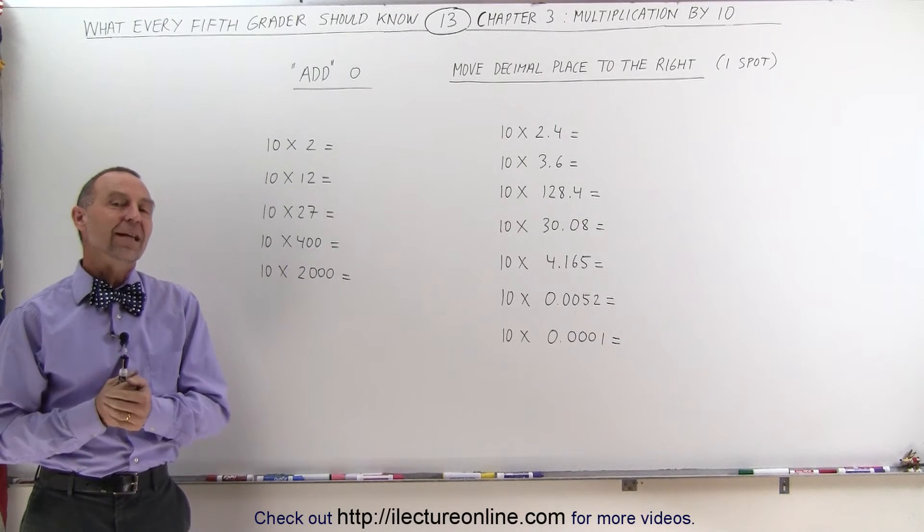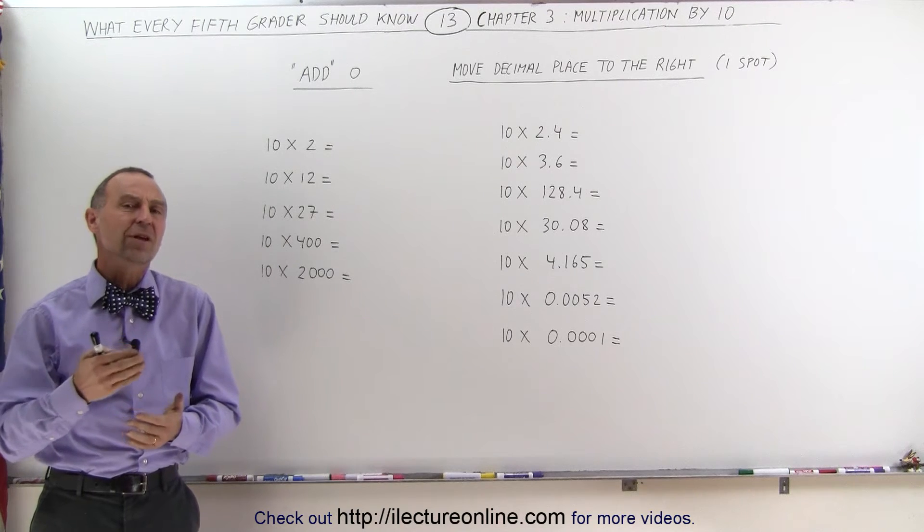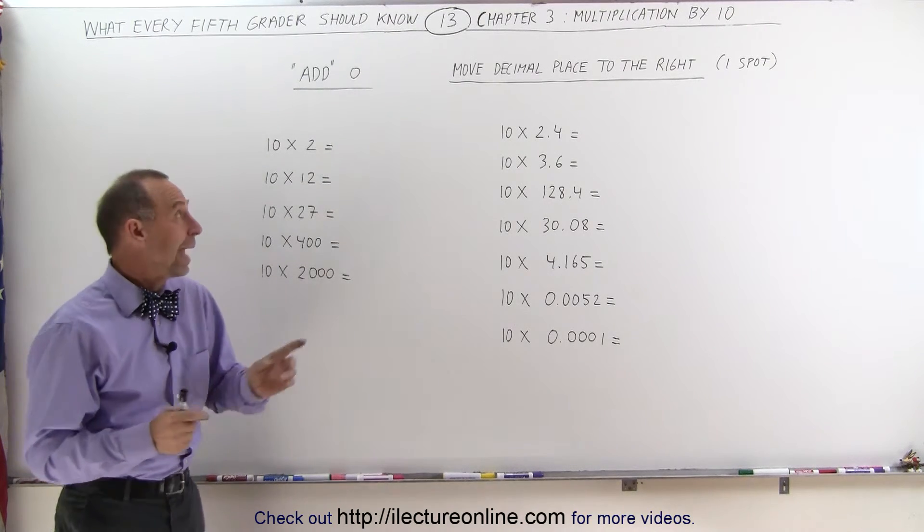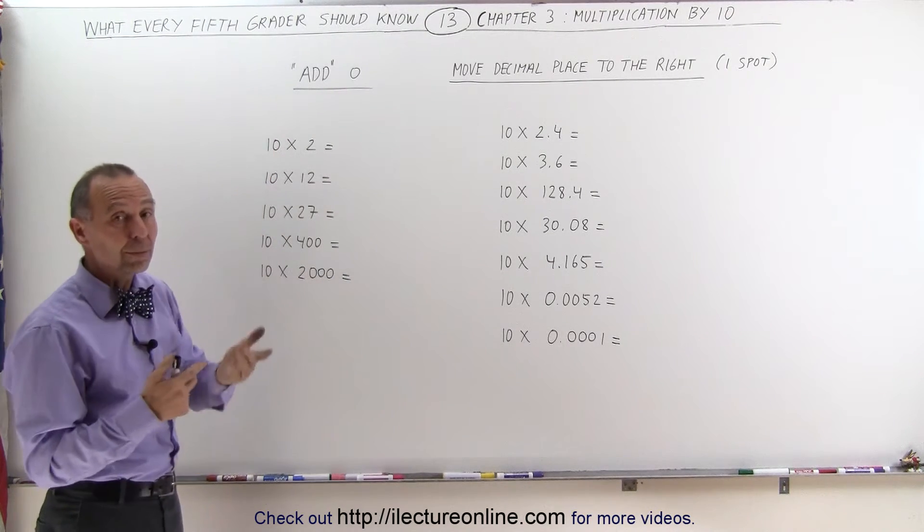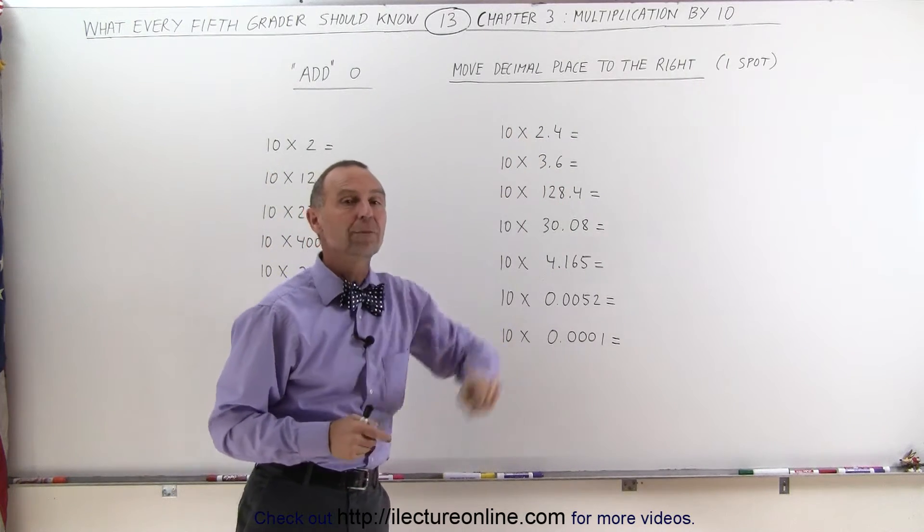Welcome to Electron Line, and now let's talk about multiplying by 10. There are two things that you need to do: either you add a 0 to the end of the number you're multiplying, or you move the decimal place over to the right one spot.